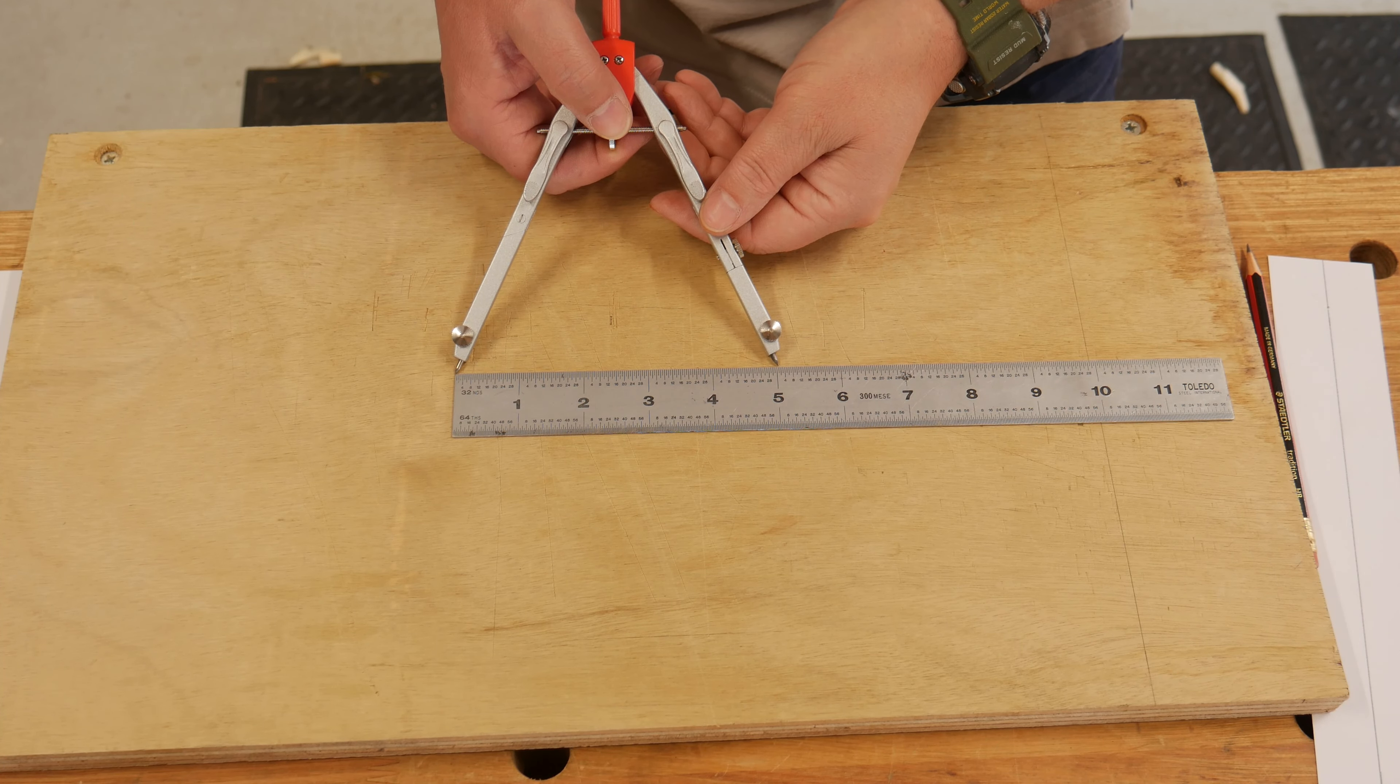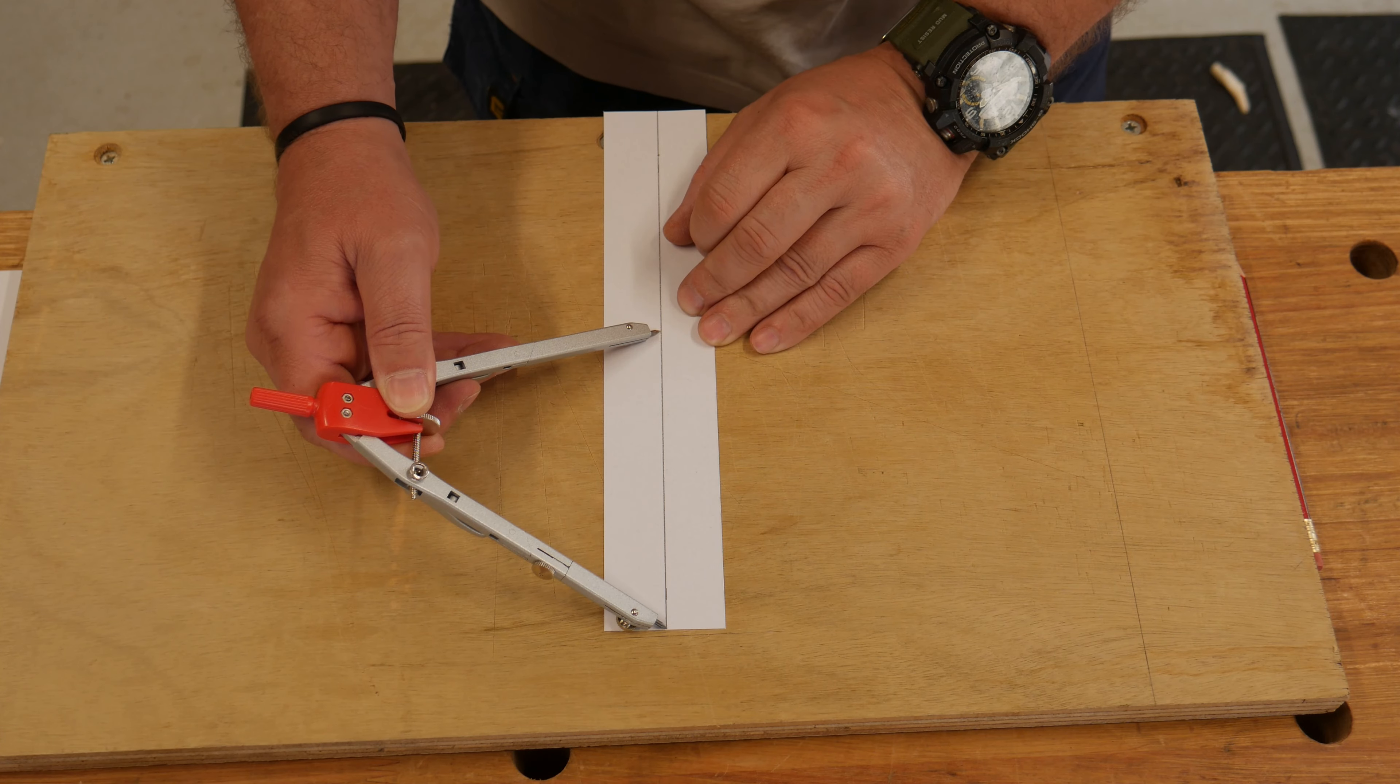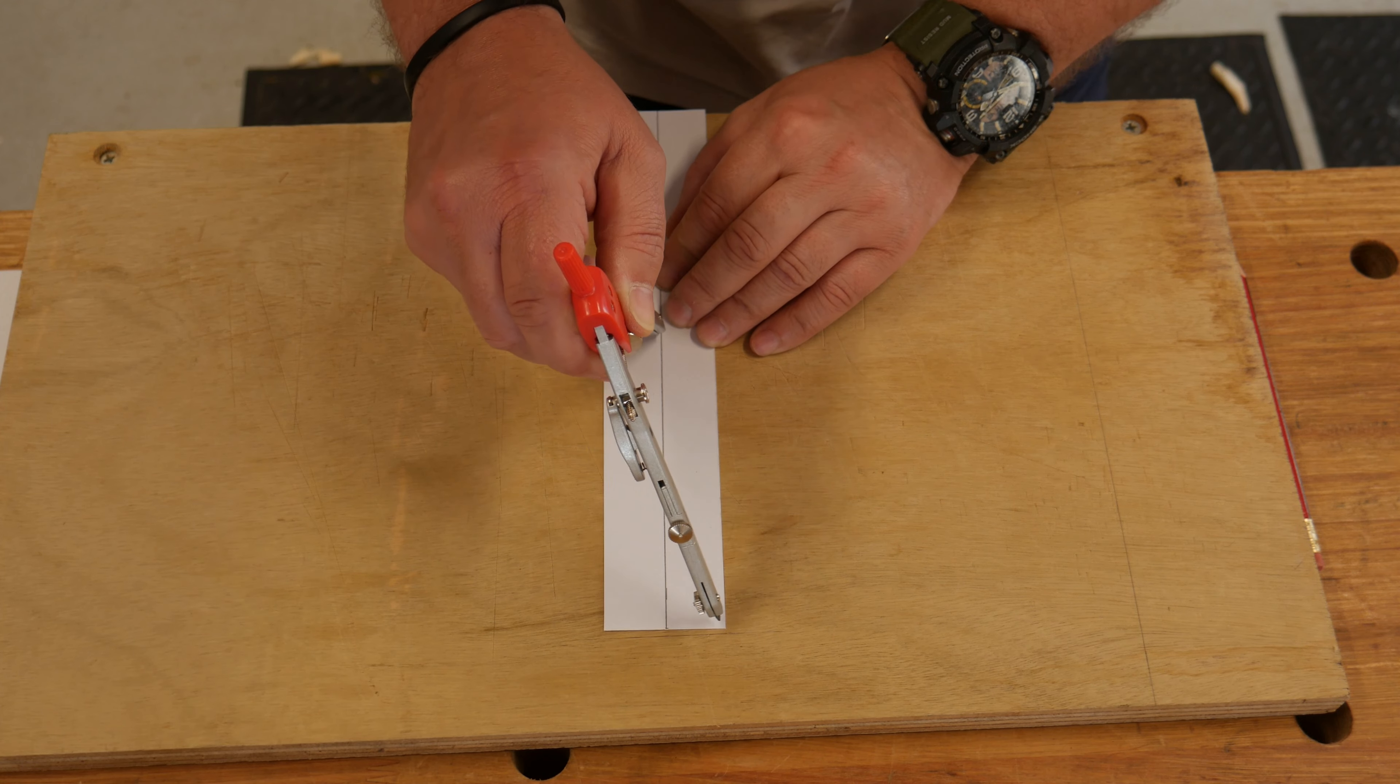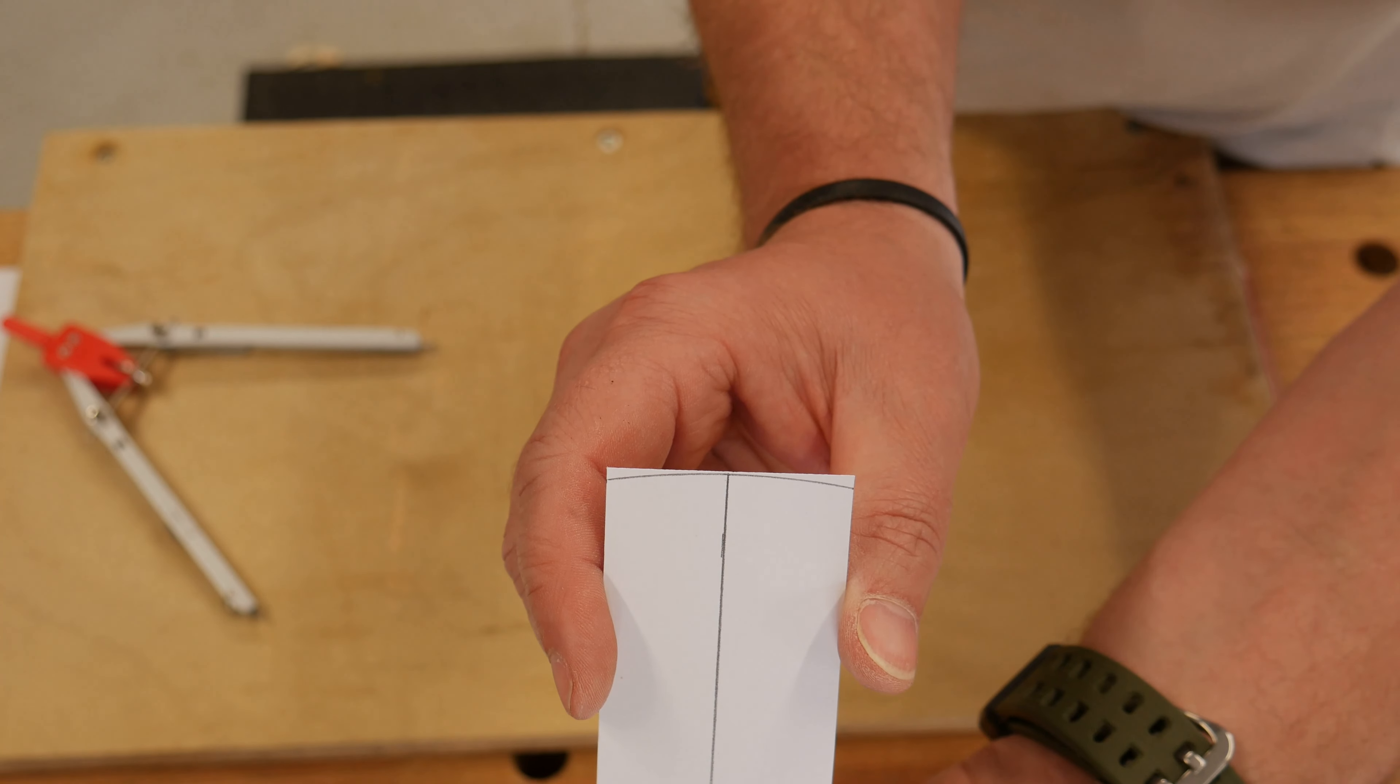In my case, I chose to go with a five inch radius, and after setting a compass and placing it on the center line, an arc was drawn out.